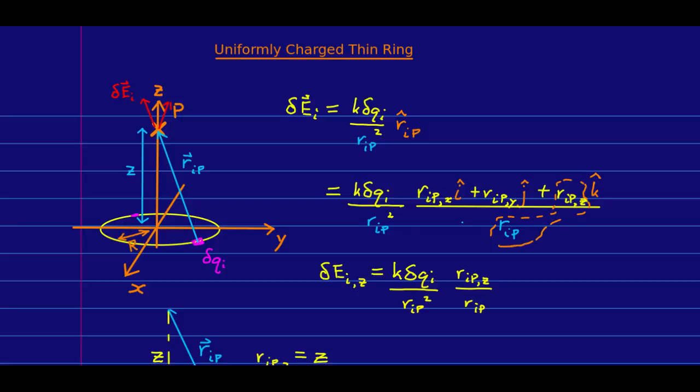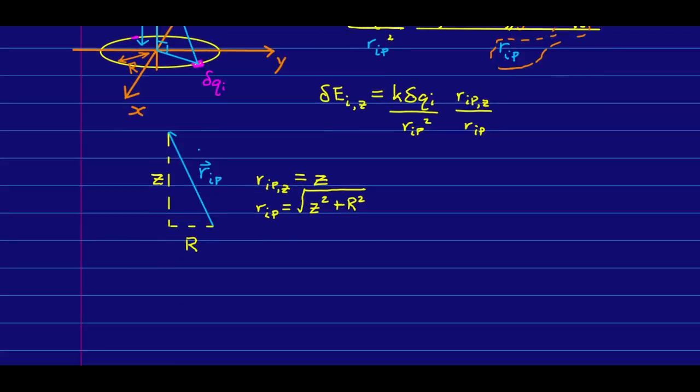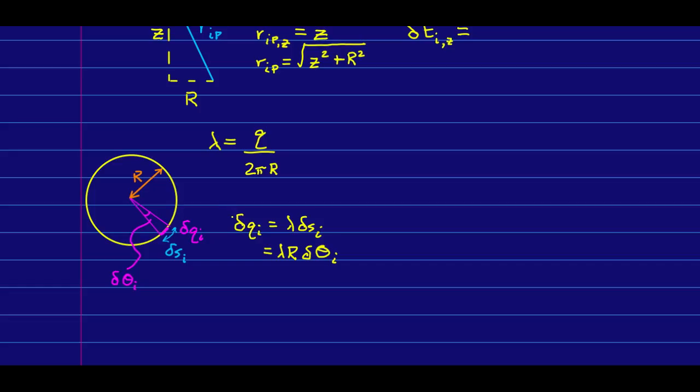So, as before, we're going to be very interested in these components of the r_IP and in the magnitude of r_IP. And note that no matter what point on the ring we're looking at, there's a triangle that looks like this, which is a right-angle triangle. And this side of it is R and this side of it is z. And so, it's going to look like this. And that tells us that the z component of r_IP is just z and that the magnitude is just this.